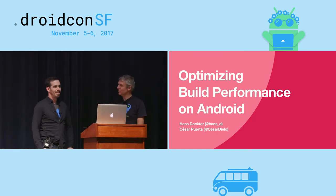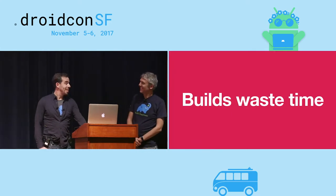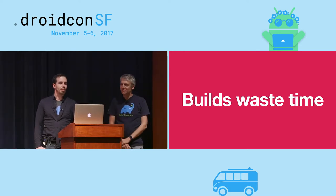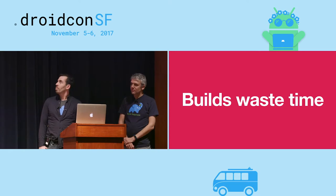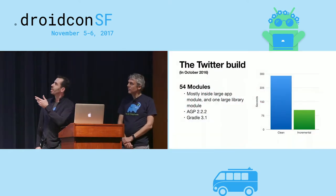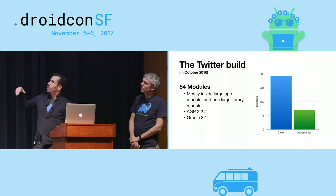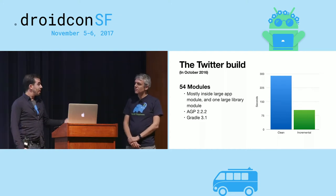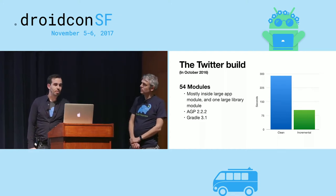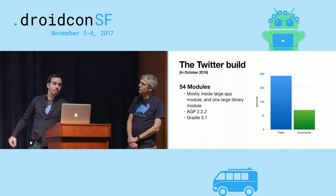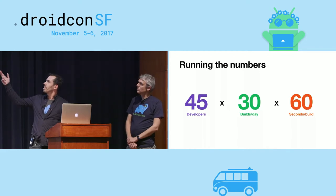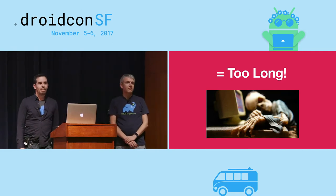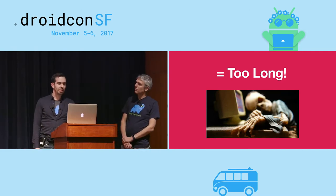What was your experience with that transition? Well, builds waste time. Anytime you're just waiting for a build, that's wasted time. So how bad is it? This is our build at Twitter one year ago: 54 modules, one huge module, and a bunch of smaller modules. These were the dark times of AGP 2.2 and Gradle 3.1, and our build times were awful. With 55 developers and 30 builds per day, that's like one full day waiting for builds every single day.